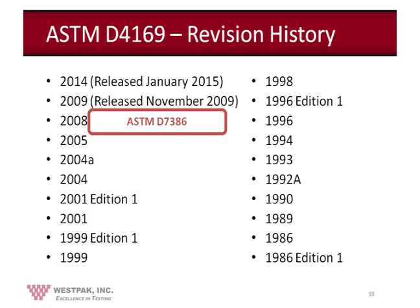Going back to the revision of ASTM D4169: in the 2008 revision, another performance standard was introduced — ASTM D7386. ASTM D7386 is a relatively recent package integrity test standard. Many old-timers often wonder why this procedure required a separate document rather than simply another distribution cycle. What really happened was an attempt to modify distribution cycle 13 and add some elements to it. It basically does the same thing as D4169 but is geared toward the specific requirements of smaller parcels, such as medical devices and pharmaceuticals.